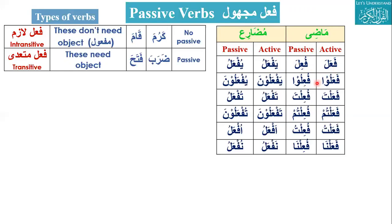Applying the madi passive pattern: fa'alu becomes fu'ilu; fa'alta becomes fu'ilta — first letter pesh, second letter kasra, lam has sukoon so it doesn't change. Similarly fa'altum becomes fu'iltum; fa'altu becomes fu'iltu; fa'alna becomes fu'ilna.